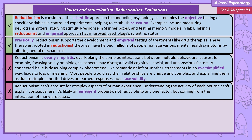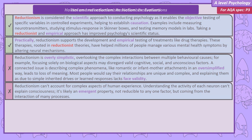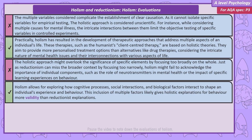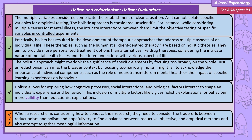The advantages and disadvantages of taking a holistic approach are reflections of reductionism. When a researcher is considering how to carry out their research, they need to consider the trade-offs between reductionism and holism, and how to balance their reductive, objective and empirical methods, while also attempting to gather meaningful information.